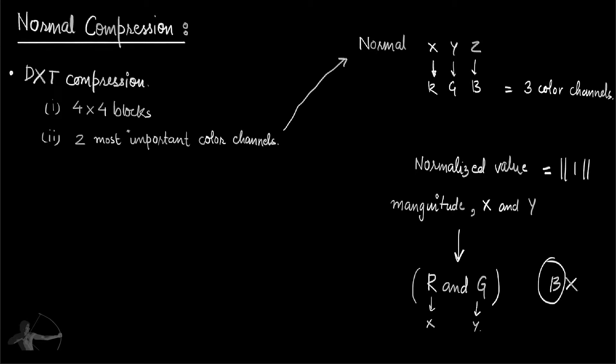So by ignoring one channel and calculating it manually in the shader, we achieved the goal. But later we realized that the quality of normal compression is even better if we are dependent on only one color channel.